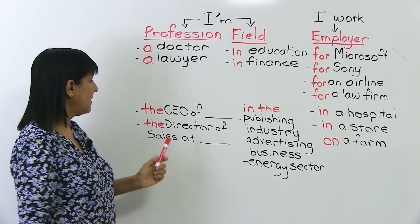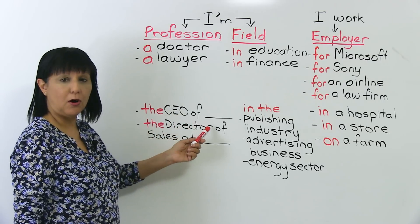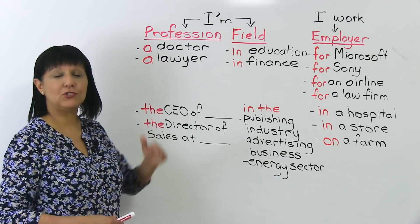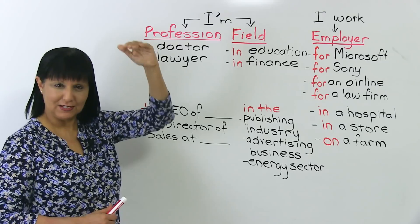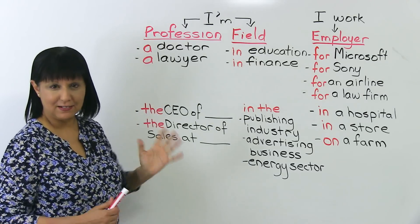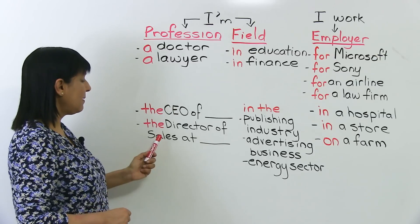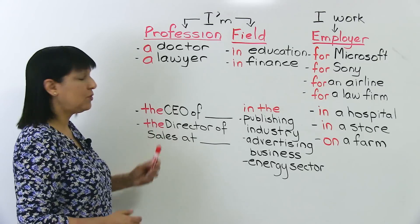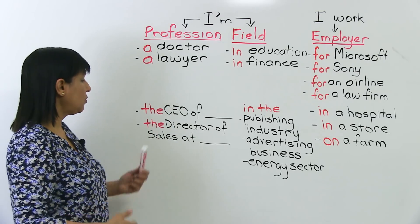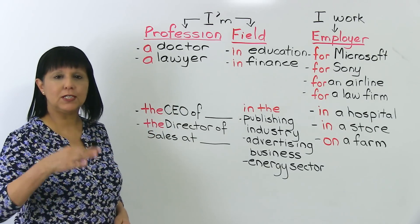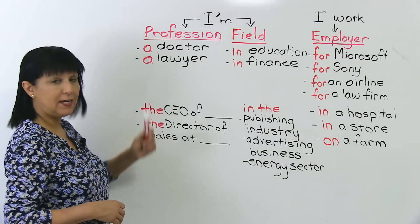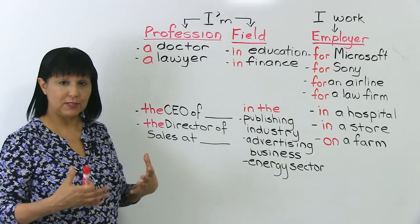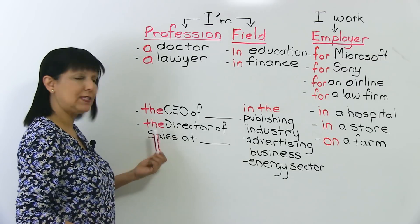Now I'm going to show you a little bit more that you could say. For example, you could say I'm the CEO of Microsoft. CEO is chief executive officer — the top person, the senior most executive. Or I'm the director of sales at Sony. So here you're giving your position. Because it's a particular position, we don't say 'a', we say 'the'. So if you're giving your title or position, remember to say 'the'.